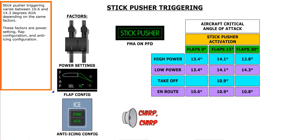Stick pusher triggering varies between 10.6 and 14.3 degrees AOA depending on the same factors. These factors are power setting, flap configuration, and anti-icing configuration.